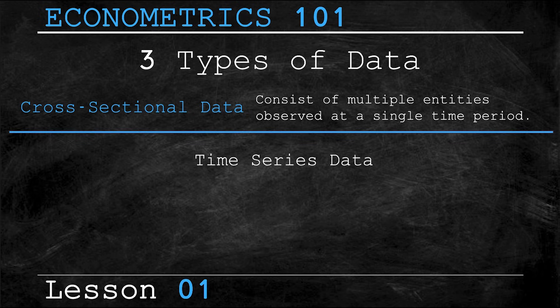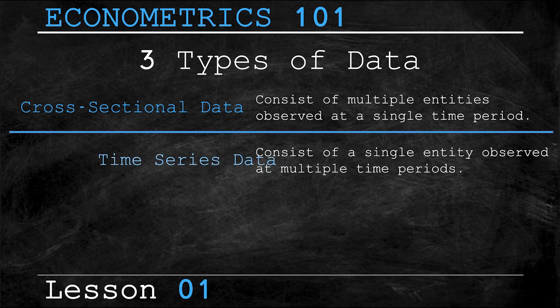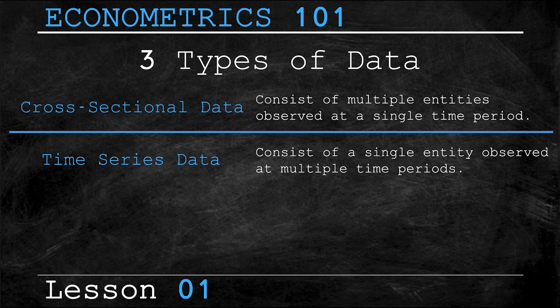Next, we have time series data. Now this data consists of a single individual or entity being observed at multiple, that is two or more, time periods. A simple example of this type of data is the daily closing value of the New York Stock Exchange. In this example, we have one entity, that is the New York Stock Exchange, being observed over multiple time periods, in this case, daily.